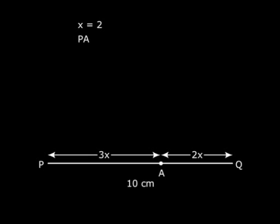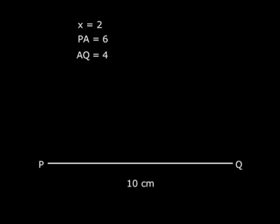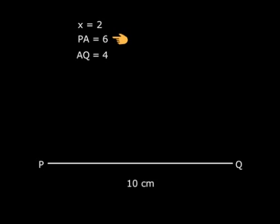So what is PA? That was 3X, 3 into 2 or 6 cm, and AQ is 2X so it is 2 into 2 or 4 cm. Now PA is 6 cm, so all we need to do is take a